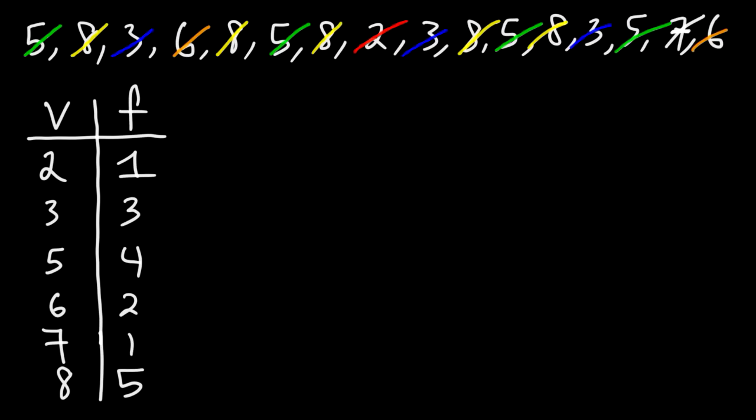So that's how you can make a frequency table. Now let's convert this frequency table into a dot plot. So let's begin by making a number line. And let's start with our lowest value, which is 2, and then go up to our highest value in order, up to 8.